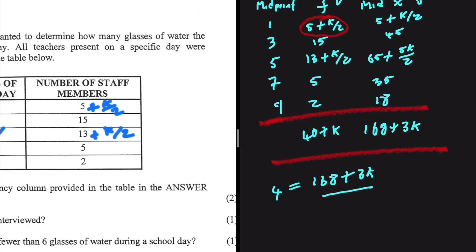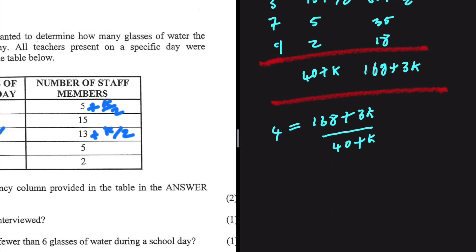If we cross multiply, 4 multiply by 40 is 160, so this will be 160 plus 4k which is equals to 168 plus 3k. If I take 3k to the left hand side I'm gonna have 4k minus 3k which shall be k. 168 minus 160 should be 8.